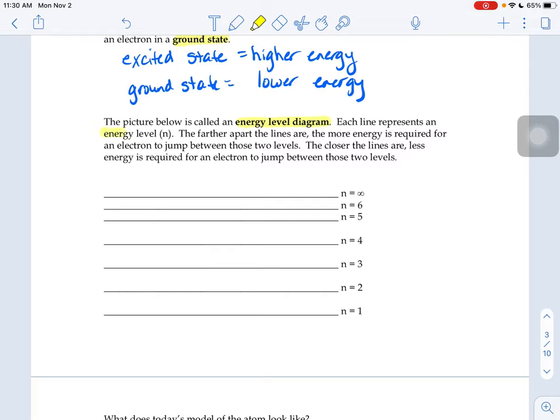Each line represents an energy level—in other words, how close you are to the nucleus of an atom. The farther apart the lines are, the bigger the difference in energy to jump from one level to another. And if it's close, then less energy.